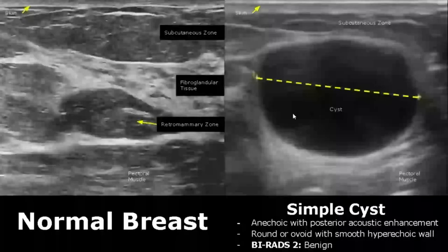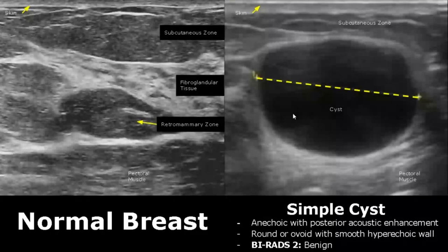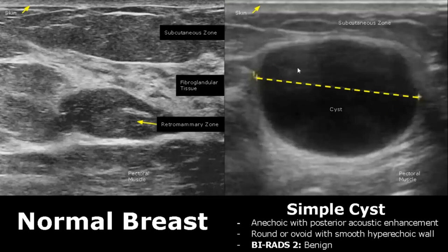A simple cyst will appear as an anechoic structure with posterior enhancement. The cyst will be round or ovoid with a smooth hyperechoic border. It is classified as BIRADS 2, which is benign.